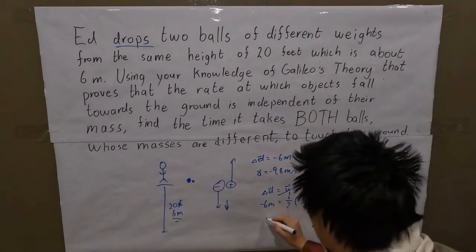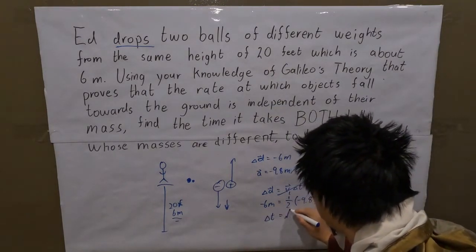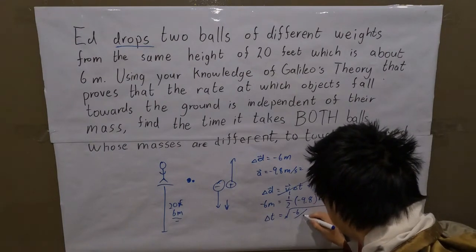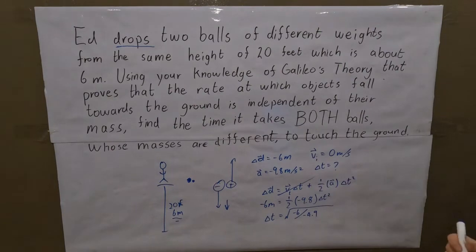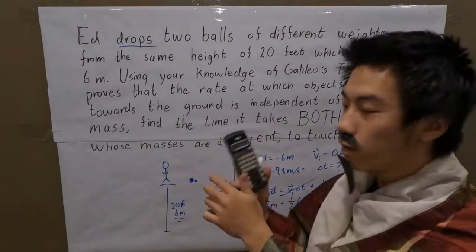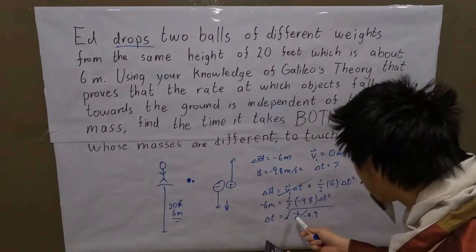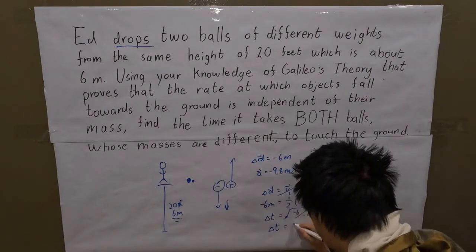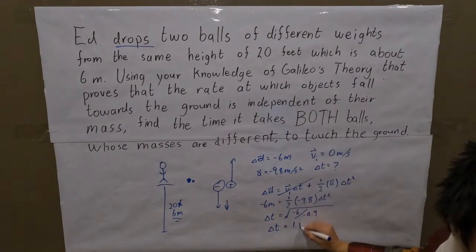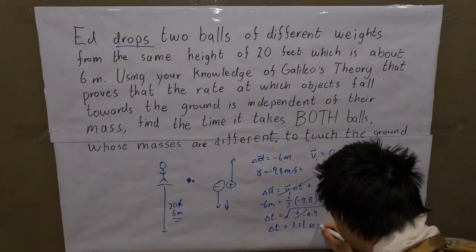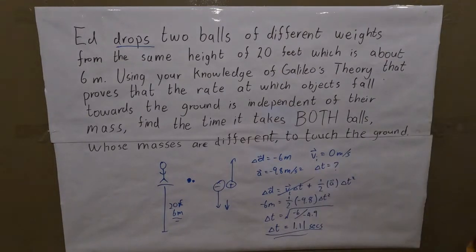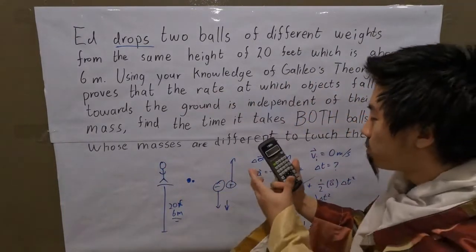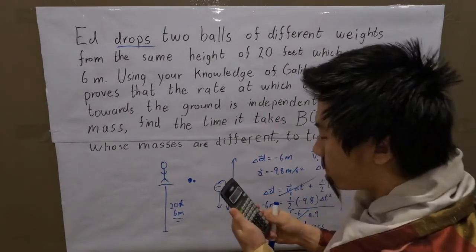Now it's just a question of math. We rearrange the equation to find that delta-t equals the square root of negative 6 divided by negative 4.9. Using this incredible device, we find that the square root of negative 6 divided by negative 4.9 is approximately 1.11 seconds. This is the answer to the problem — all thanks to this magnificent, ingenious, essential tool. I cannot believe such an incredible device could be invented.